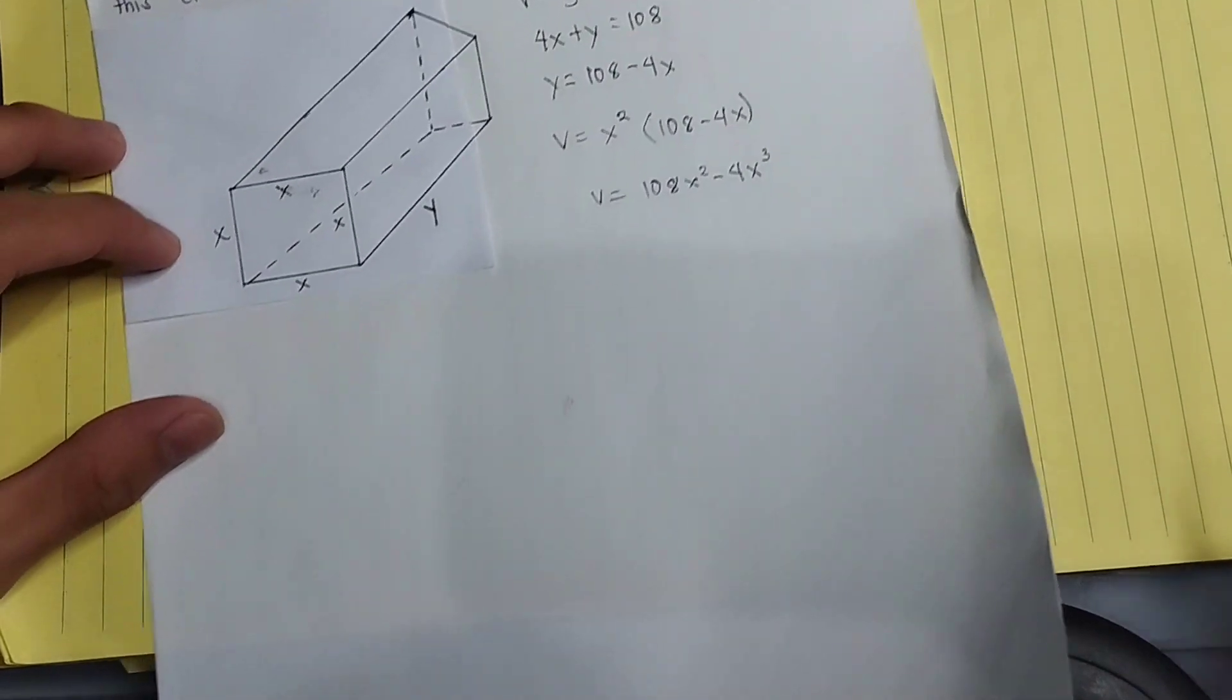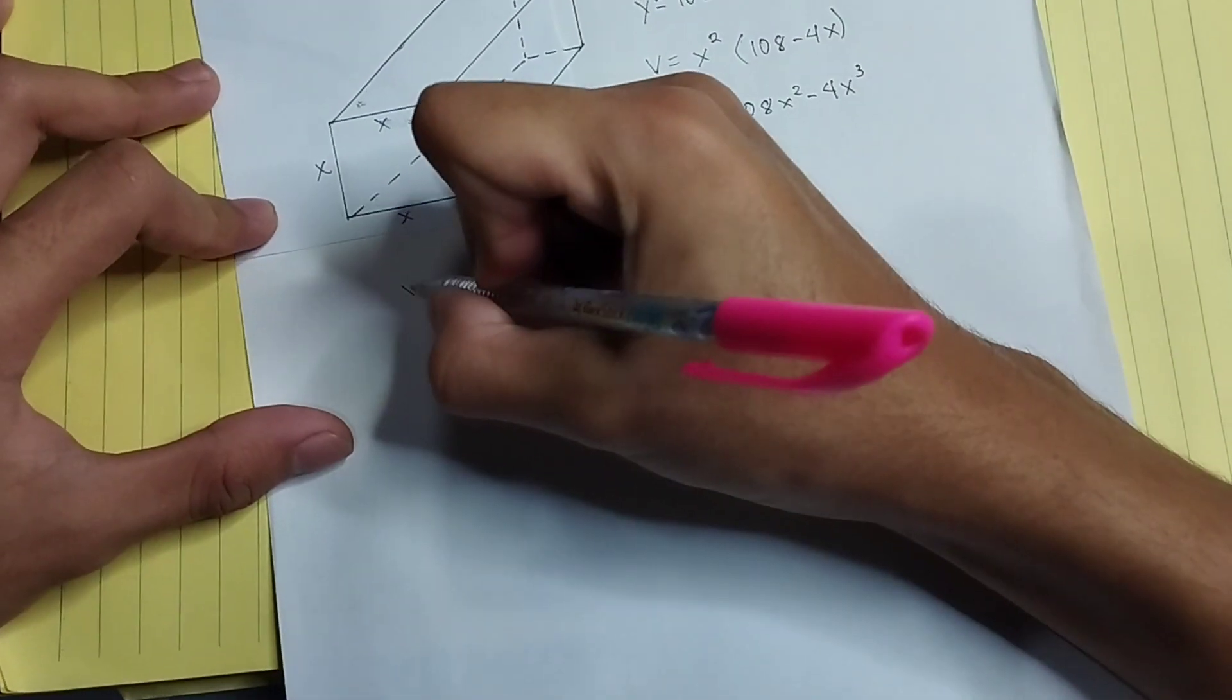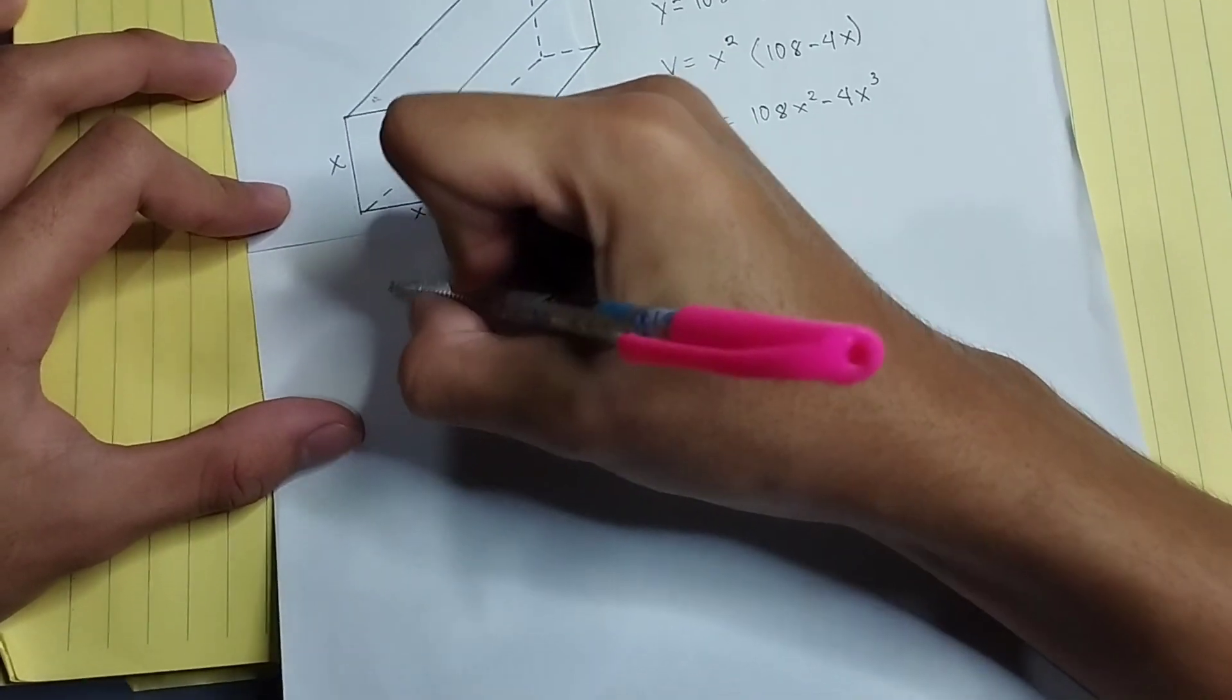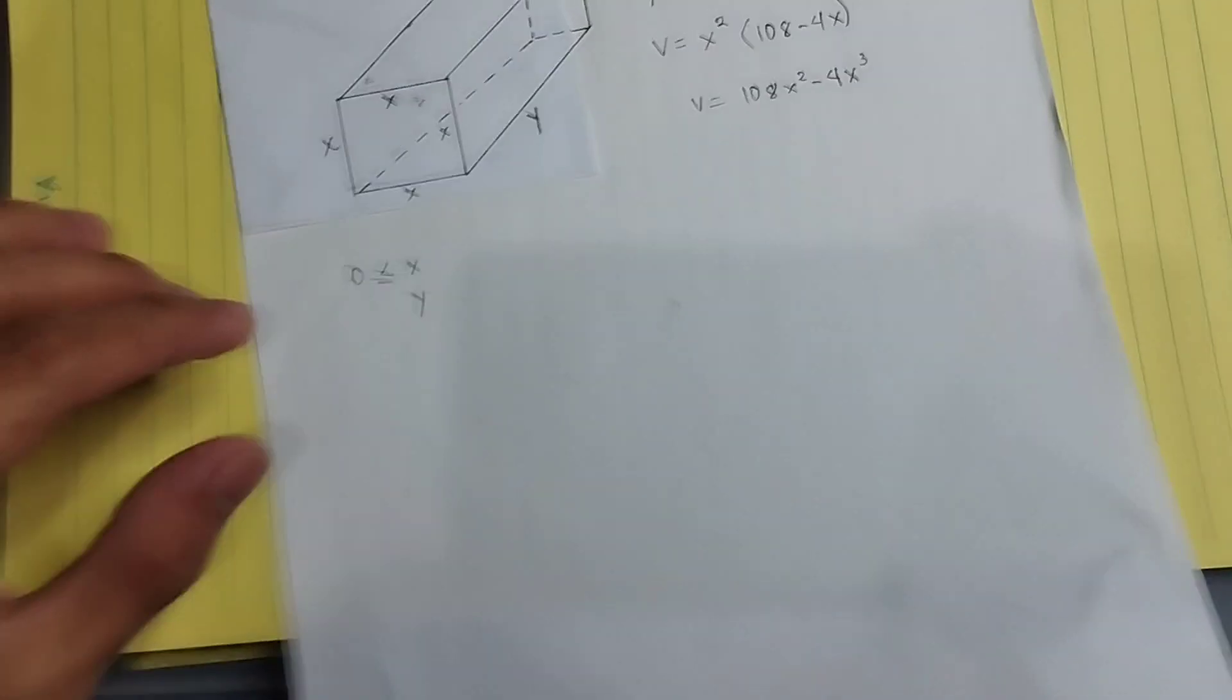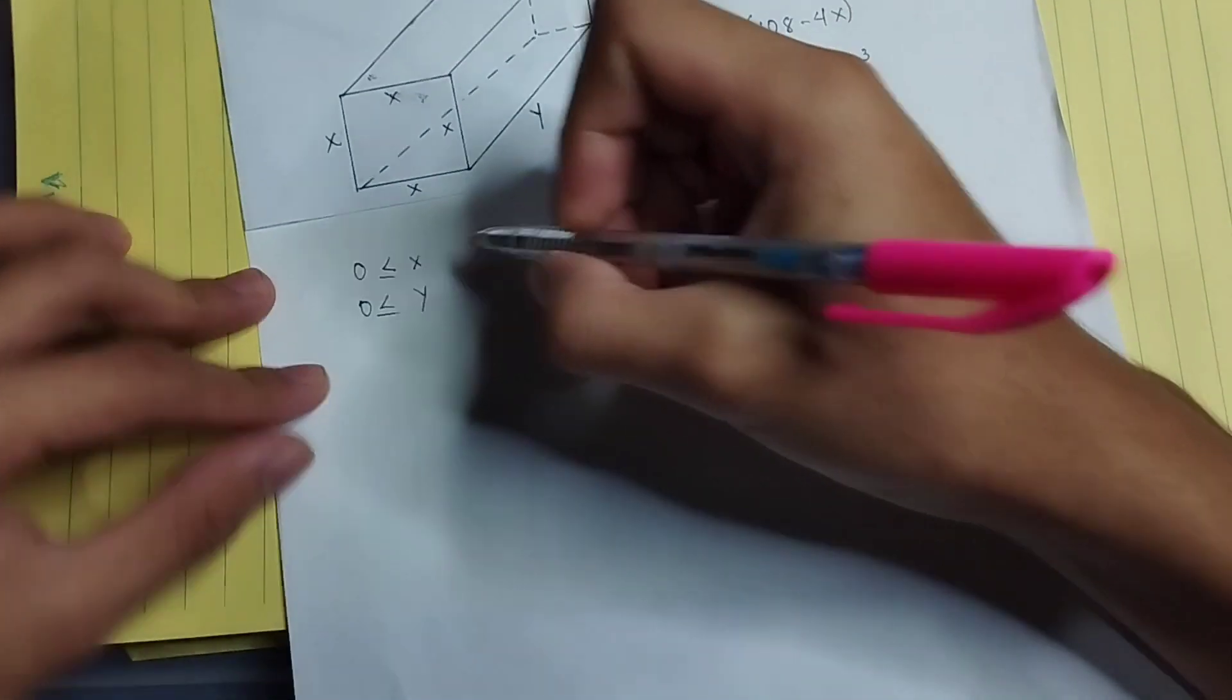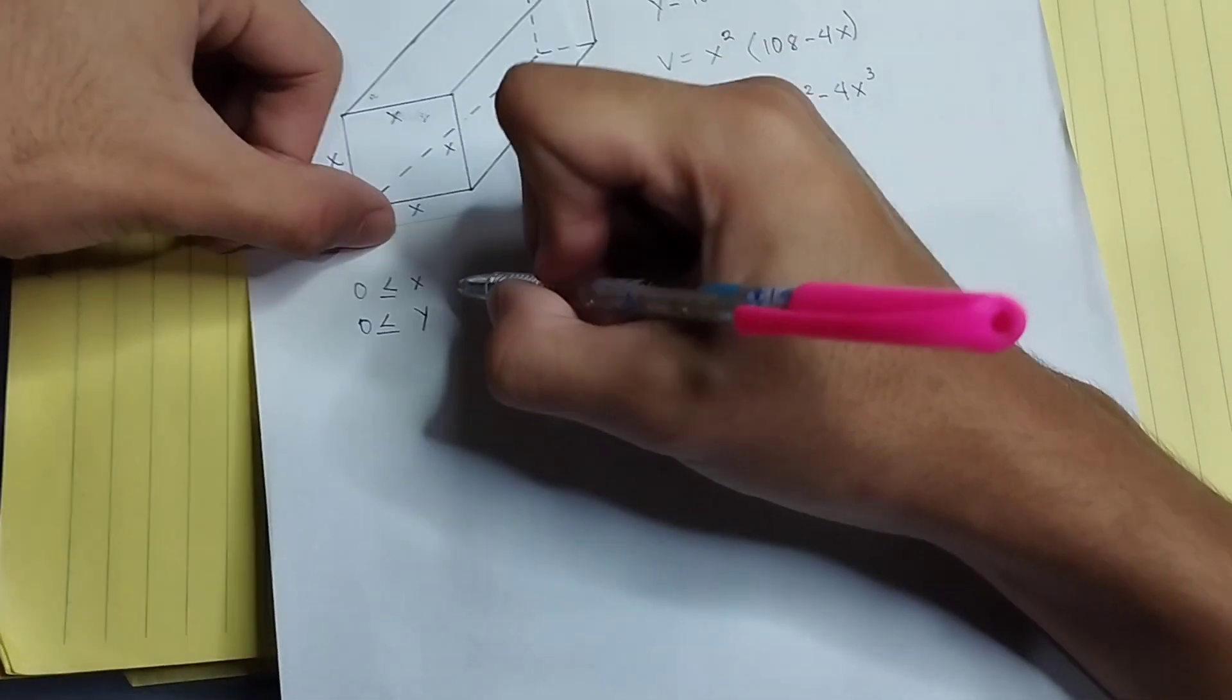So we can say that x and y, the domain, should not be less than zero and it should be greater than zero.